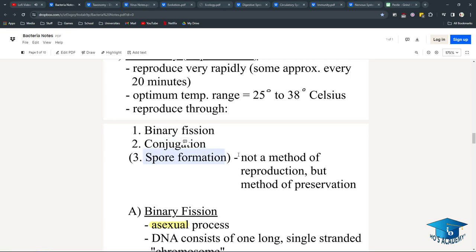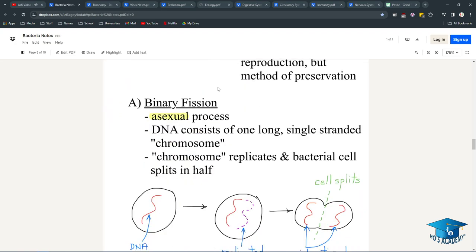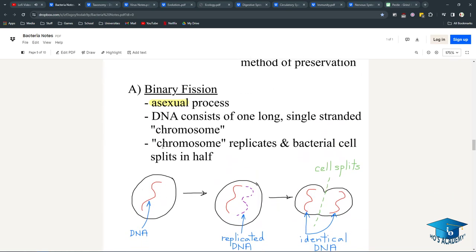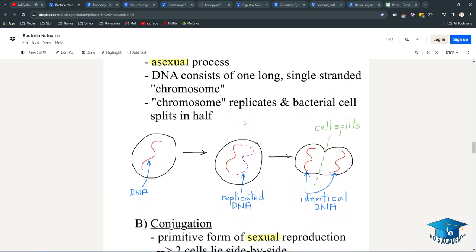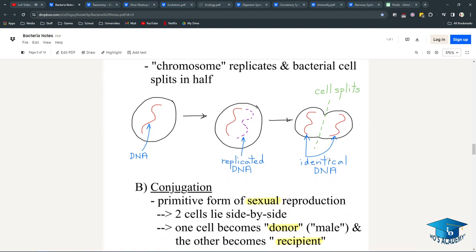They reproduce through binary fission, conjugation, and spore formation. Spore formation is not necessarily reproduction but a way for them to preserve themselves for later reproduction. Binary fission is asexual, meaning they can achieve it themselves. DNA consists of one long-stranded chromosome. The chromosome replicates and the bacterial cell splits in half, like cytokinesis, and both cells have identical DNA.